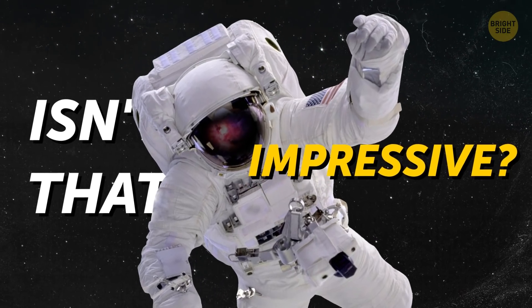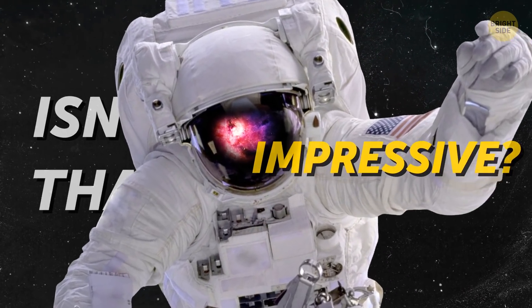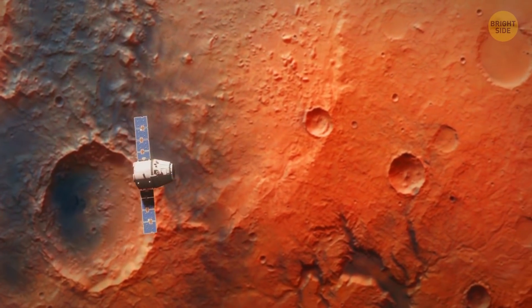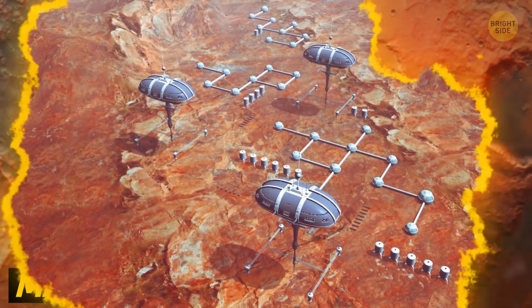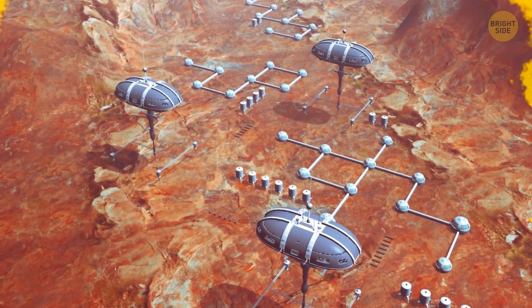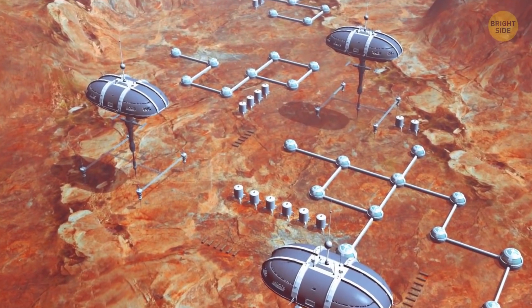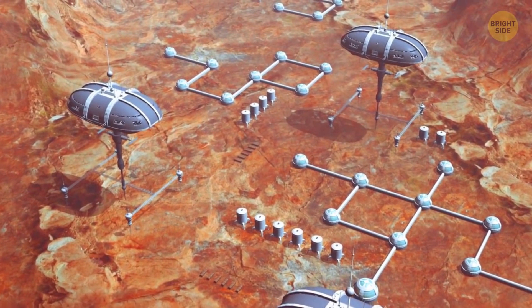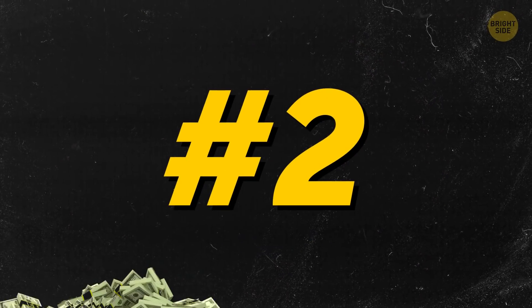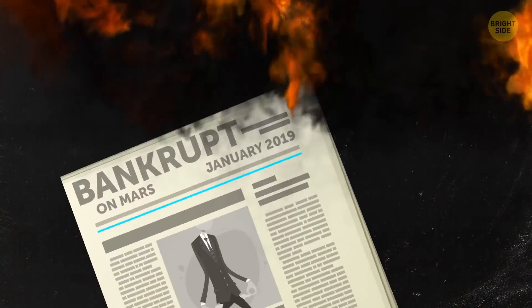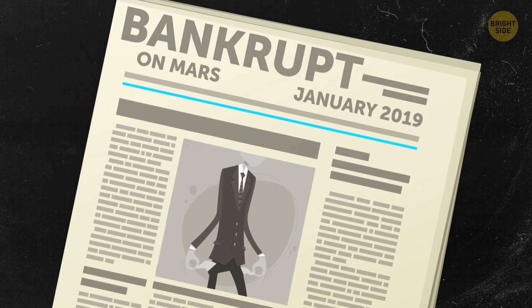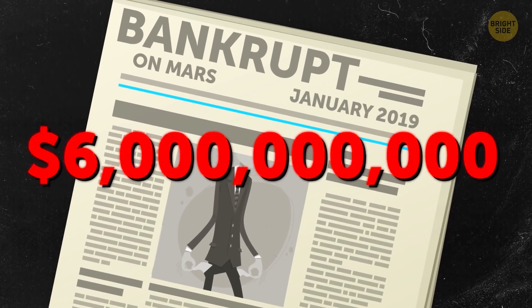But what if you don't want to wait and would like to set off to space right away? Then, I have a bunch of ideas for you. For example, you could apply for participation in the Mars One mission. The organizers were looking for volunteers who wanted to set up a colony on the Red Planet. However, this idea would have two big drawbacks. First of all, you would never return back to Earth. And secondly, the company that was preparing the mission went bankrupt in January 2019, after they hadn't managed to raise the $6 billion needed for this venture.